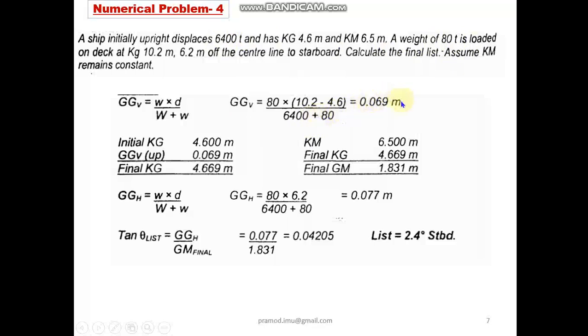Now, given the initial KG is 4.6, to that we are adding the GGv value. We will get the final KG as 4.669 meters. Now we know that the KM is given as 6.5 and the final KG we have calculated is 4.669. So if I subtract this, I will get 1.831 as the final GM value.